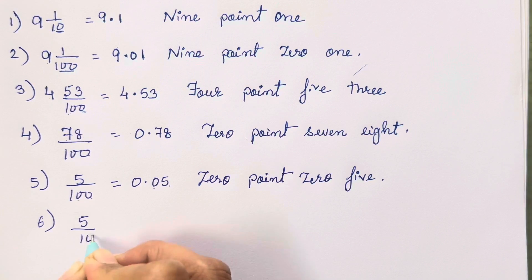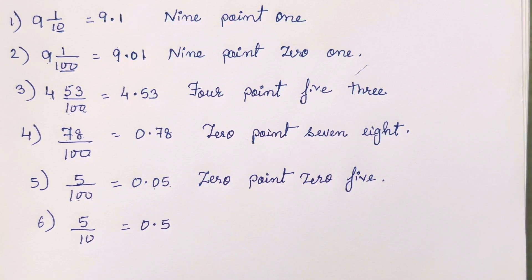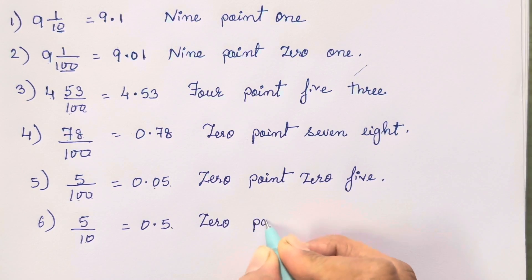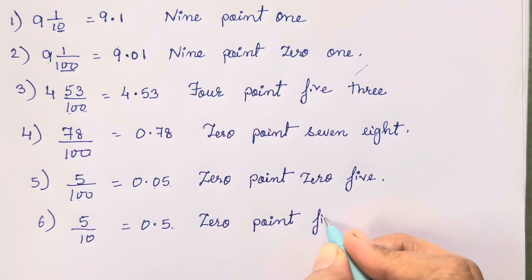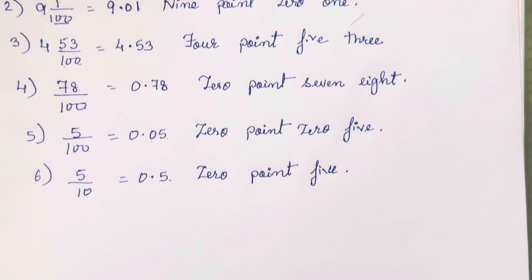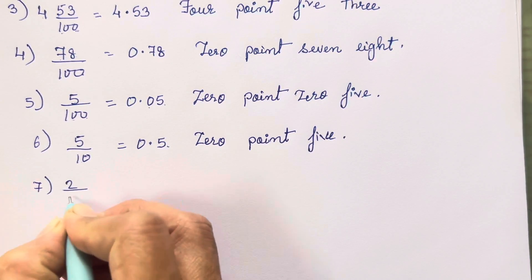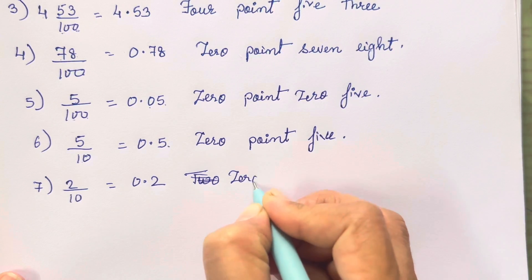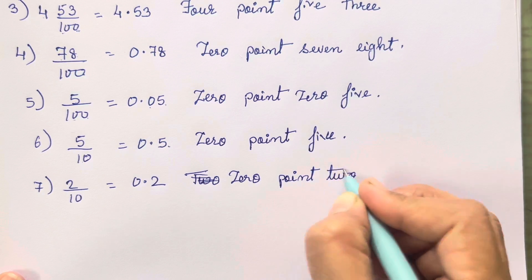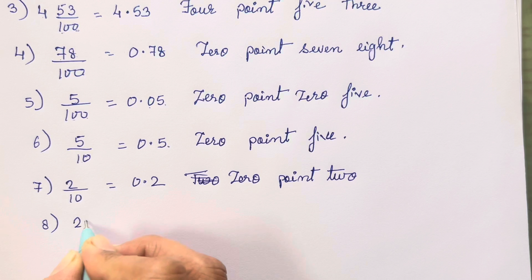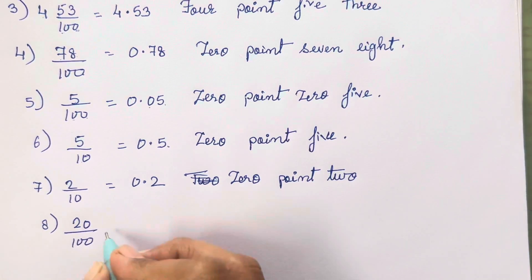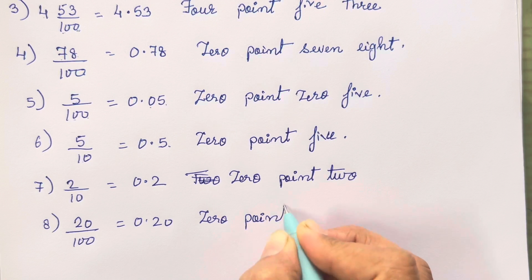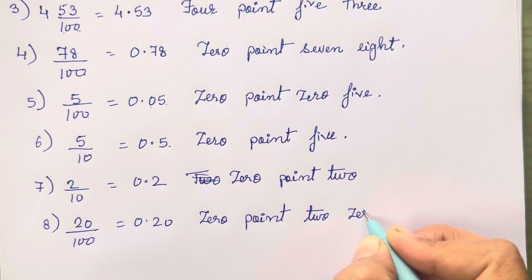Sixth is 5 upon 10. So 0.5, because one zero means one digit after the decimal point. The seventh one: 2 upon 10. So 0.2. The eighth one is 20 upon 100 — already two digits are there. So 0.20. Not 20.